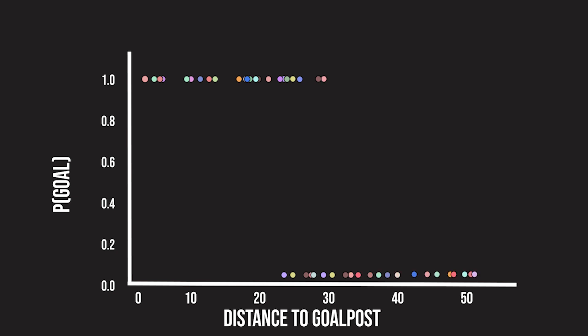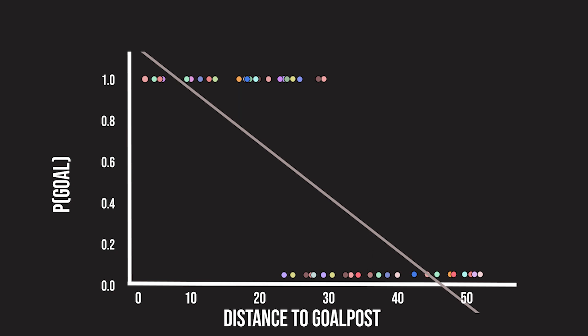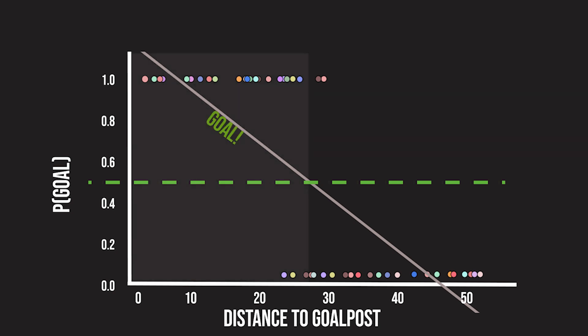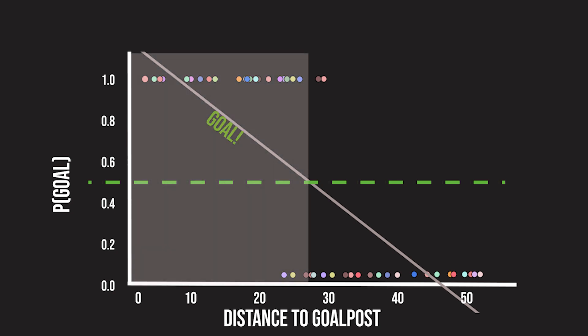Let's just try to fit a linear regression model. The gray line is the best fit line for the training dataset, which aims to minimize the distance between the predicted value and the actual value. If y is greater than 0.5 — above the green line — we predict that this shot will be a goal.